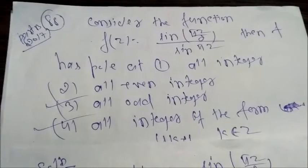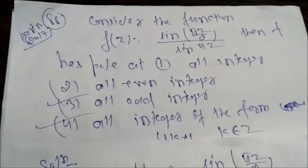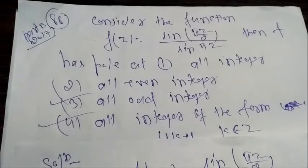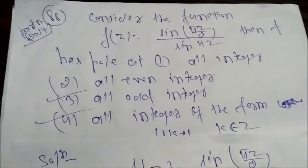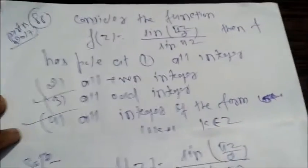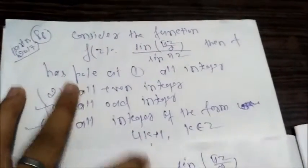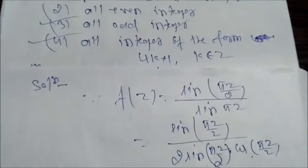Option 1: all integers. Option 2: all even integers. Option 3: all odd integers. Option 4: all integers of the form 4k+1 where k belongs to Z. The solution is f(z) equals sin(πz/2) upon sin(πz).